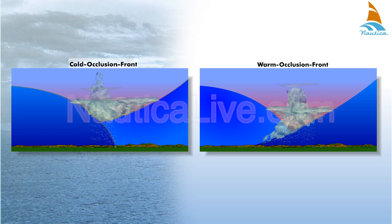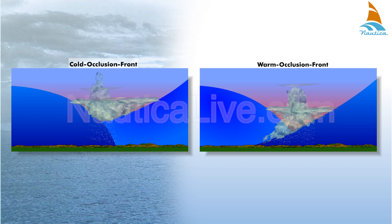A cold occlusion occurs when the air mass behind the occluded front is colder than the air mass ahead of it. A warm occlusion occurs when the air mass behind the occluded front is warmer than the air mass ahead of it.